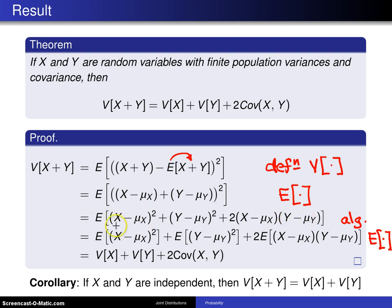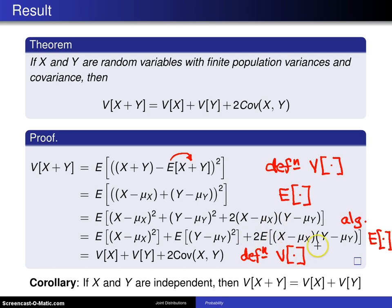The expected value of this first term is there, the expected value of this second term is here, and pulling the constant two outside of the expected value operator, here is that very last term. This first expected value is the definition of the variance operator, so that is the variance of x. This second term is the definition of the variance of y. And finally, this last term is twice the definition of the covariance of x and y. So this is the right-hand side, and with these five steps we have proved the result.